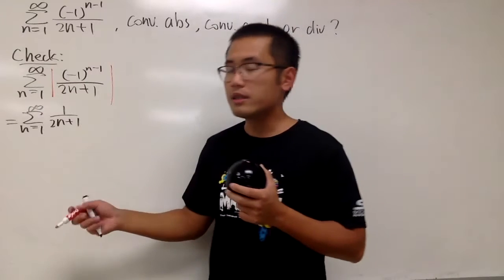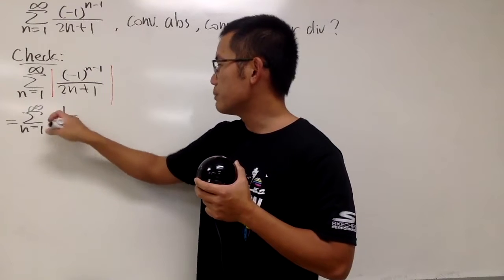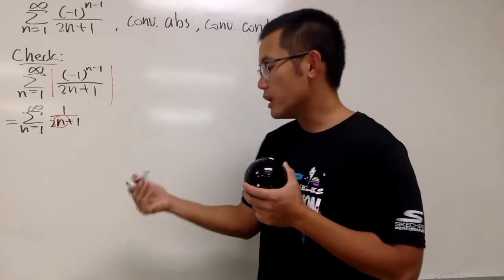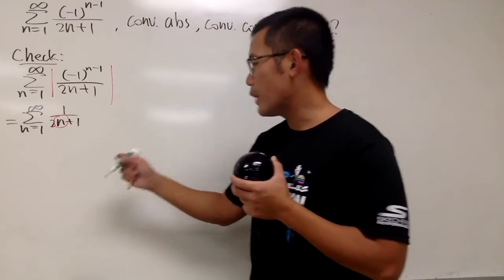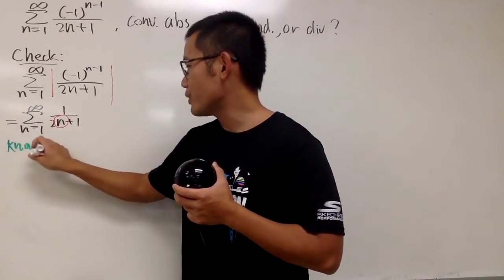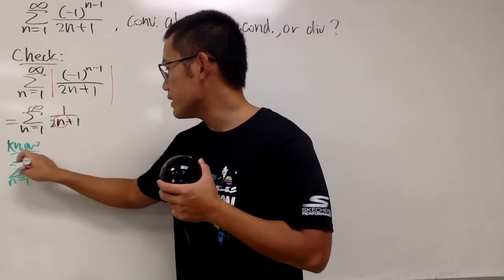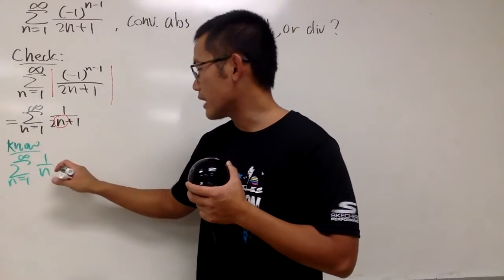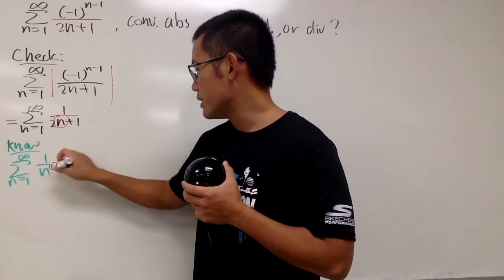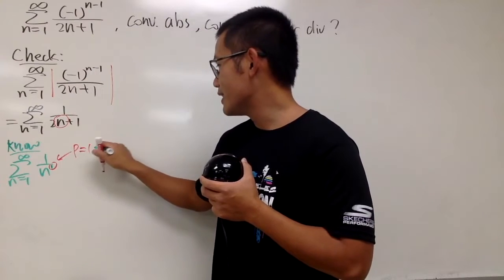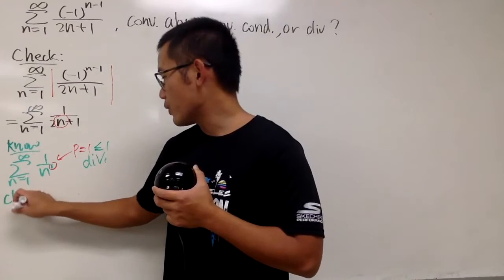We can do a quick comparison. Notice we have 1 over 2 times n to the first power — you can just pick the n; you don't have to include the 2. This right here diverges. We know that the sum as n goes from 1 to infinity of 1/n diverges, because this is n to the first power, meaning p equals 1, which diverges.